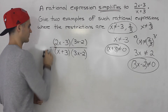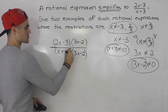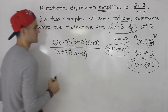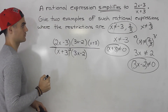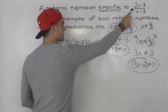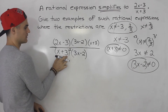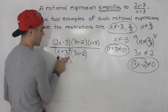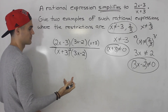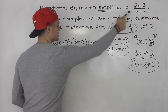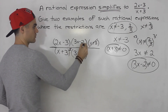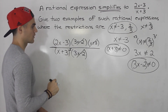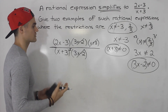Another way to do this is to put x plus 3 squared in the denominator, but then we'd also have to add an x plus 3 in the numerator. That's another example of a rational expression that simplifies to this and has these same restrictions. Even though it's squared, x still can't equal negative 3 — we wouldn't write it twice, just once, since 0 squared is still 0. So the restrictions don't change, and it still simplifies to 2x minus 3 over x plus 3.